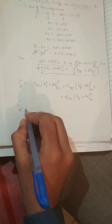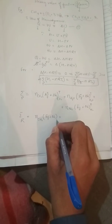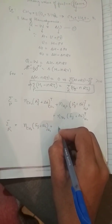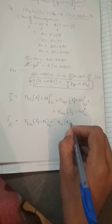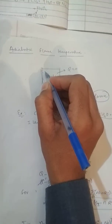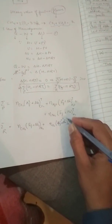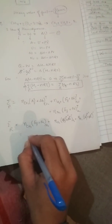For the reactants, we write the number of moles of methane times its enthalpy of formation, plus the number of moles of oxygen and nitrogen. Since the starting conditions are 25°C and 1 atm, the enthalpy of formation of O₂ and N₂ are both zero at standard reference conditions, so only the enthalpy of formation of the fuel itself remains.